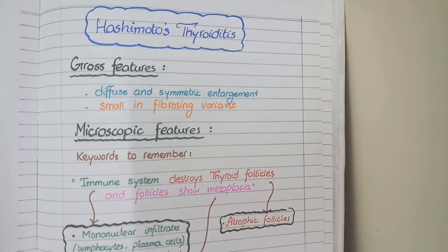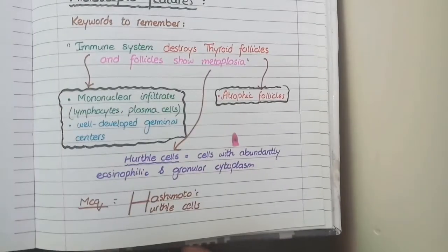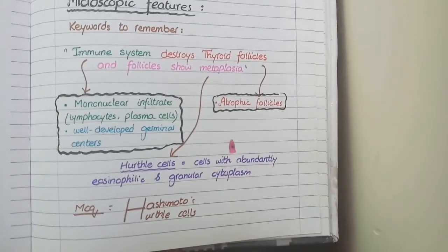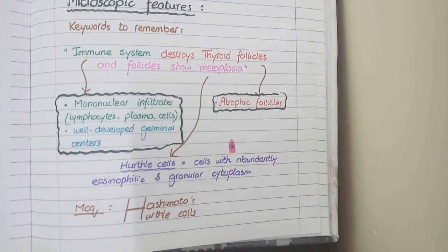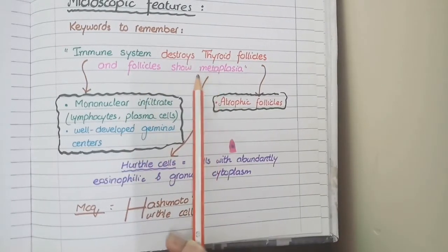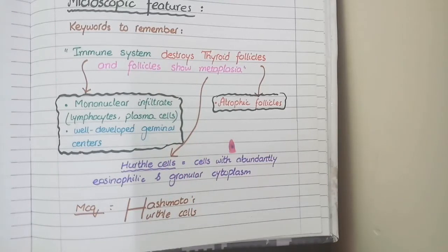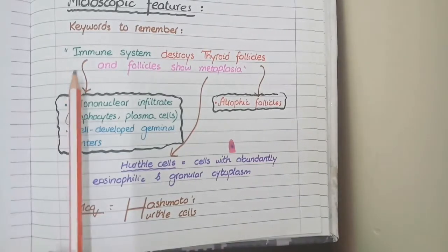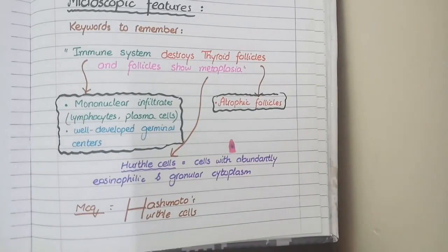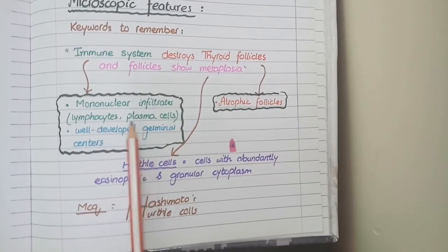Now let's learn the microscopic features of Hashimoto's thyroiditis. The keywords to remember are: immune system destroys thyroid follicles, and the follicles show metaplasia. This is the pathophysiology behind this disease and you just need to translate this into a microscopic picture. So the first keyword is immune system.